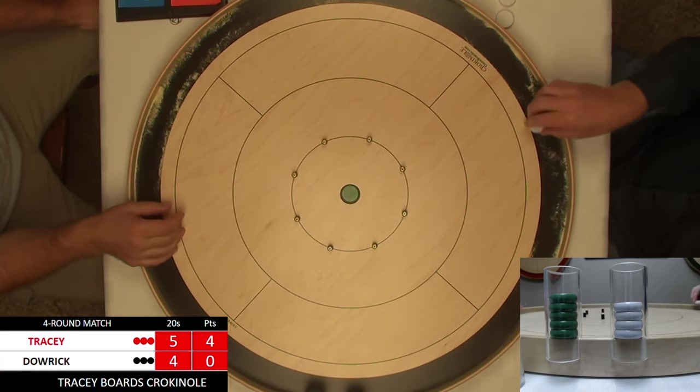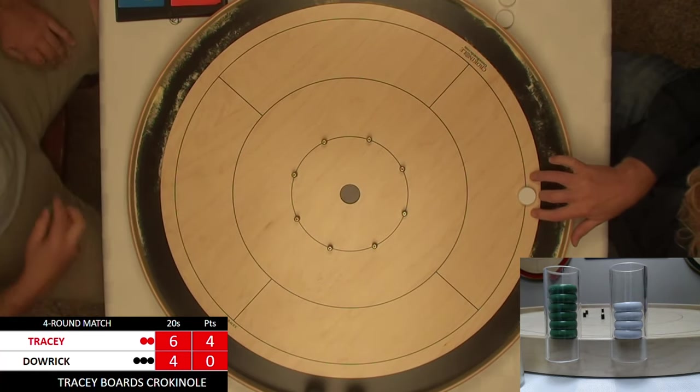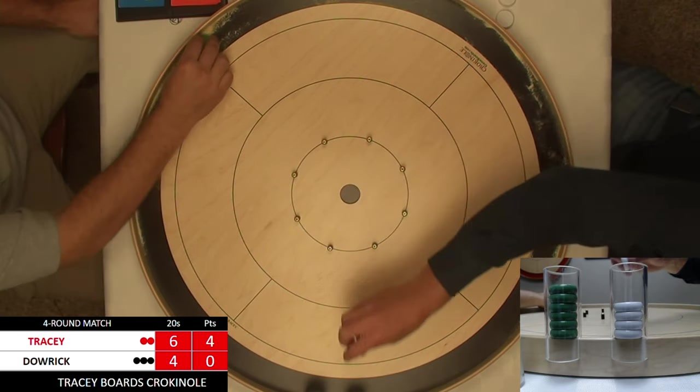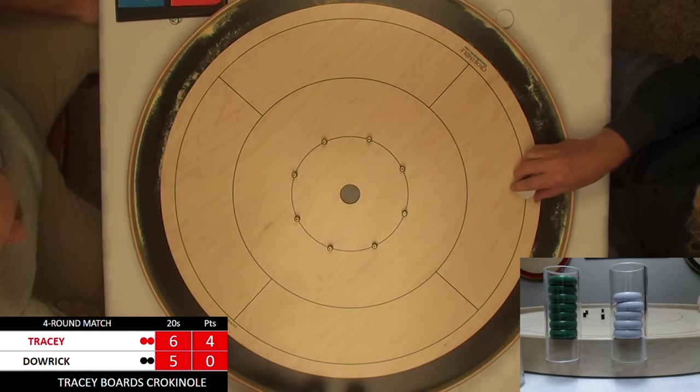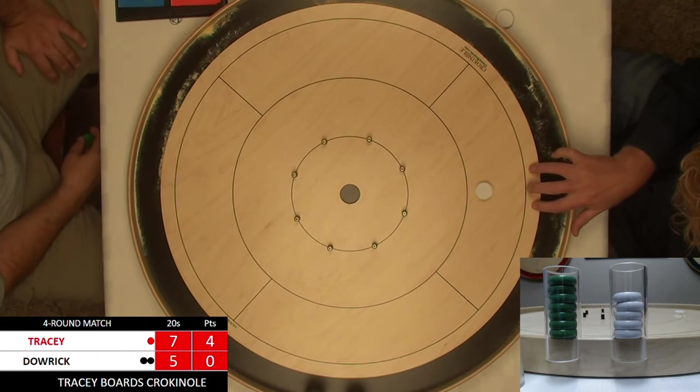Such a critical skill if you really want to compete in a Crokinole match, because I tell you, when you're sitting across from somebody that just will not miss on a 20, they are so tough to beat. It just puts the pressure on in every way.